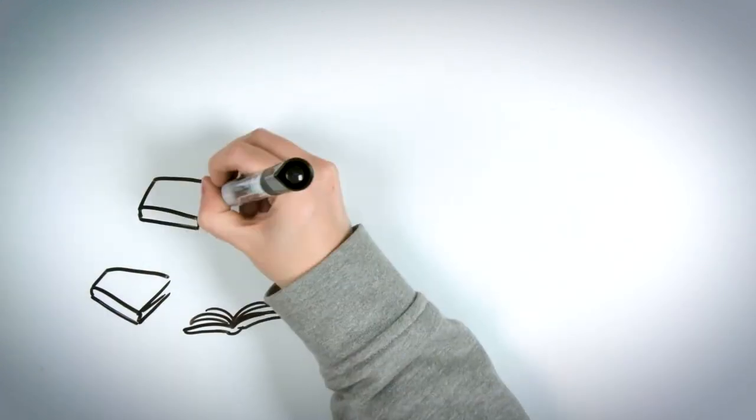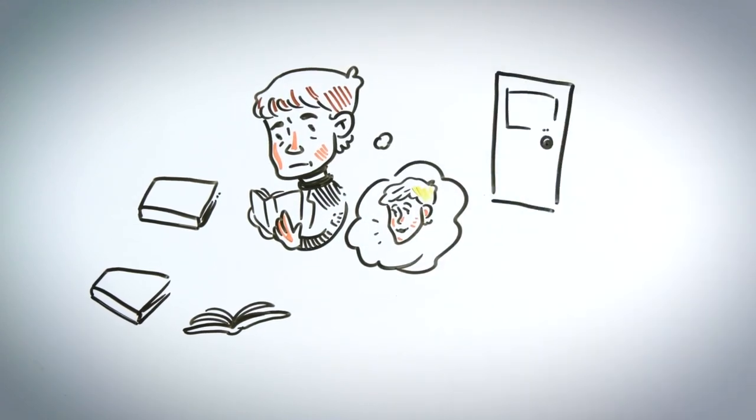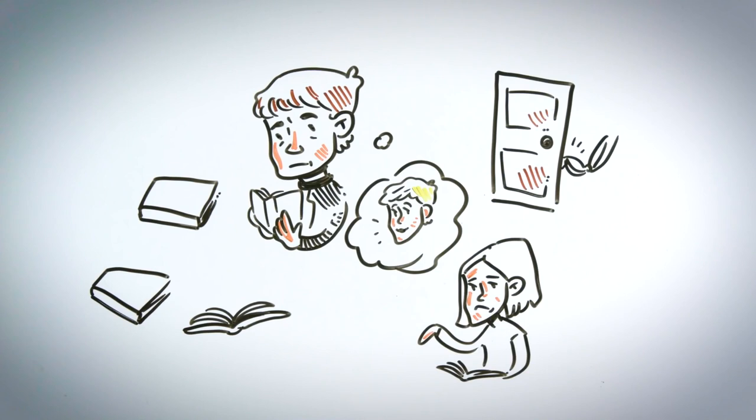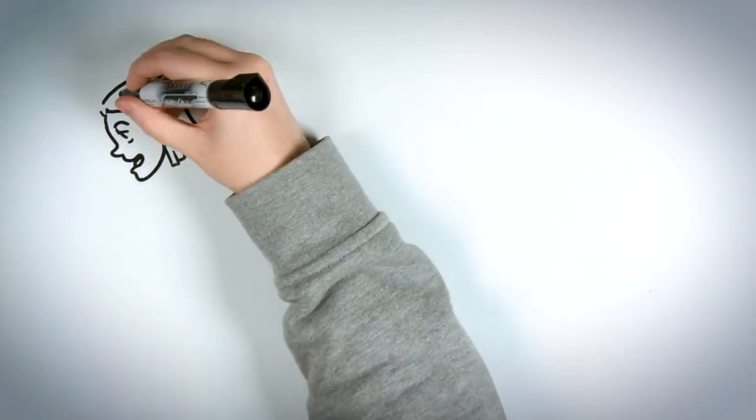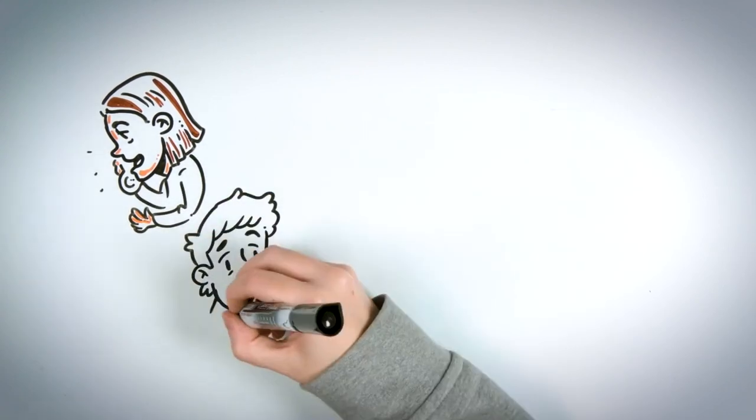While reading, Montag remembers Clarisse several times. Until the couple is surprised by a hound scratching at the door. Mildred doesn't care, and after a while the hound leaves. The phone rings and Mildred is distracted by conversation about a TV show. Montag wonders what the next step is.